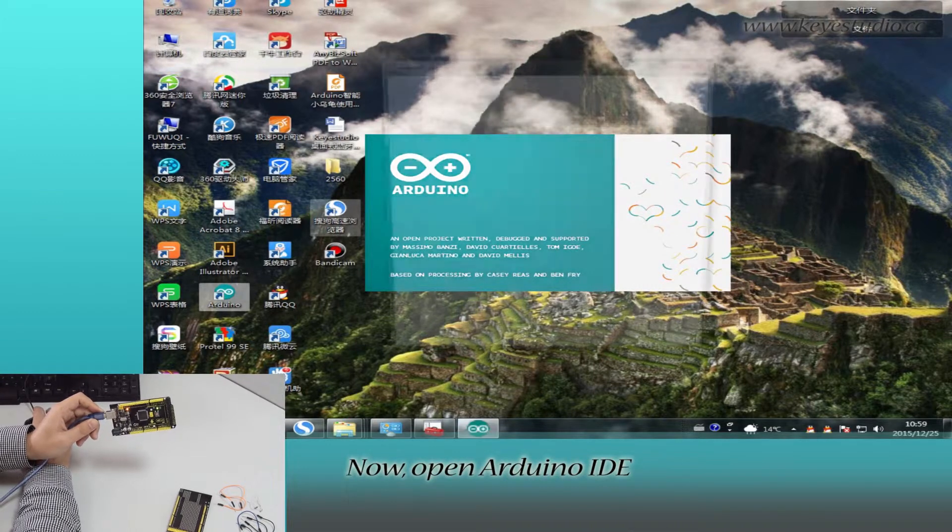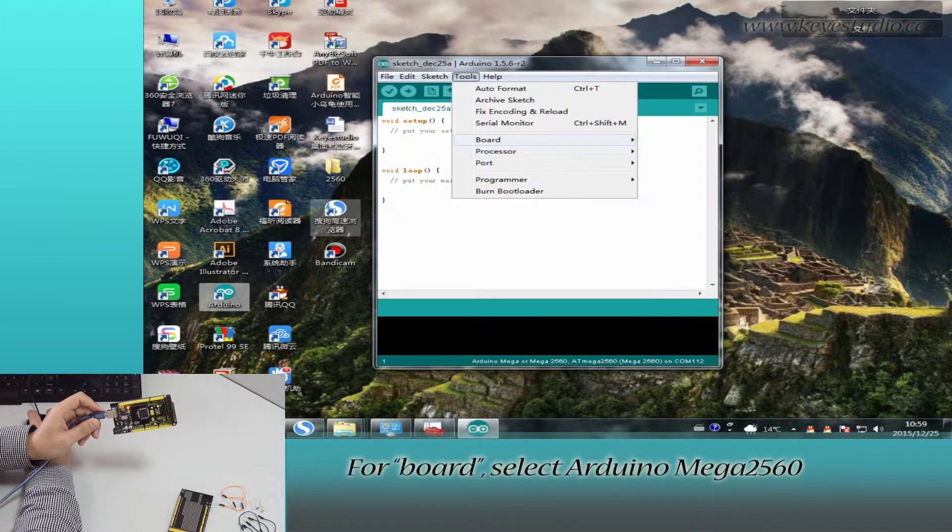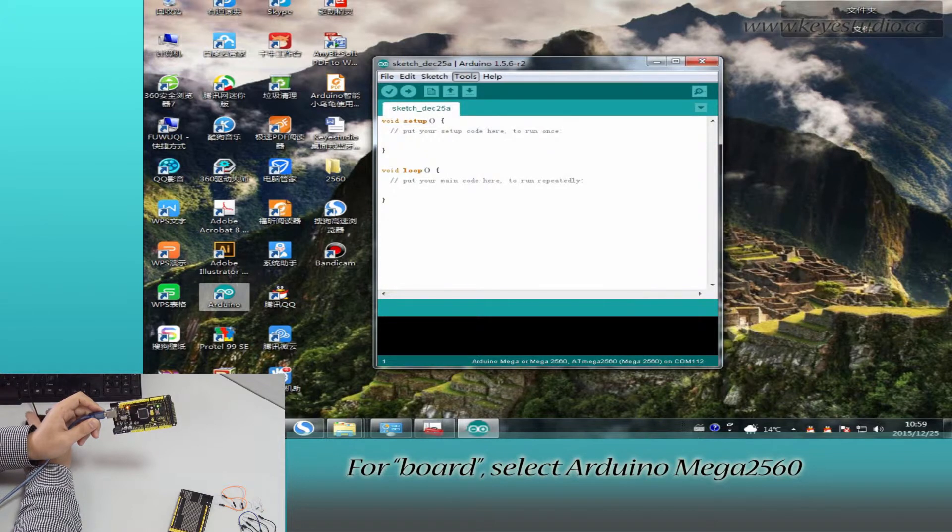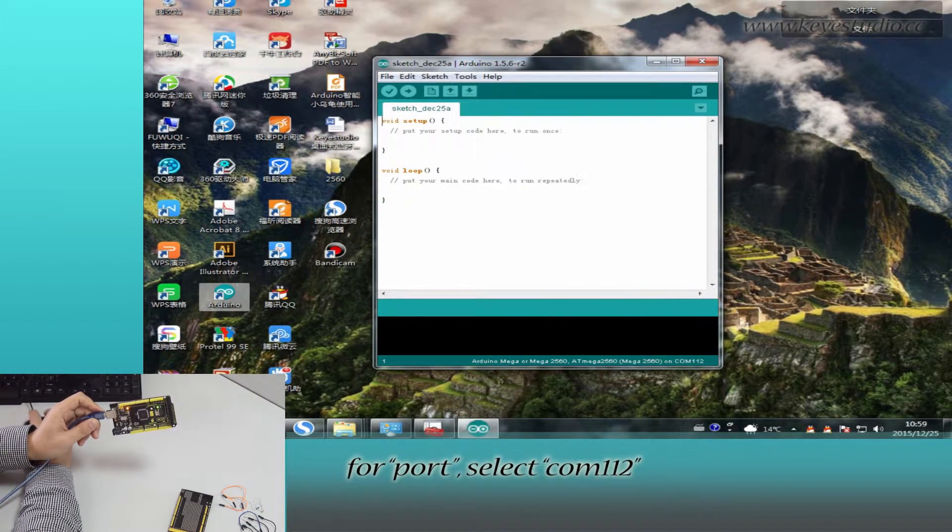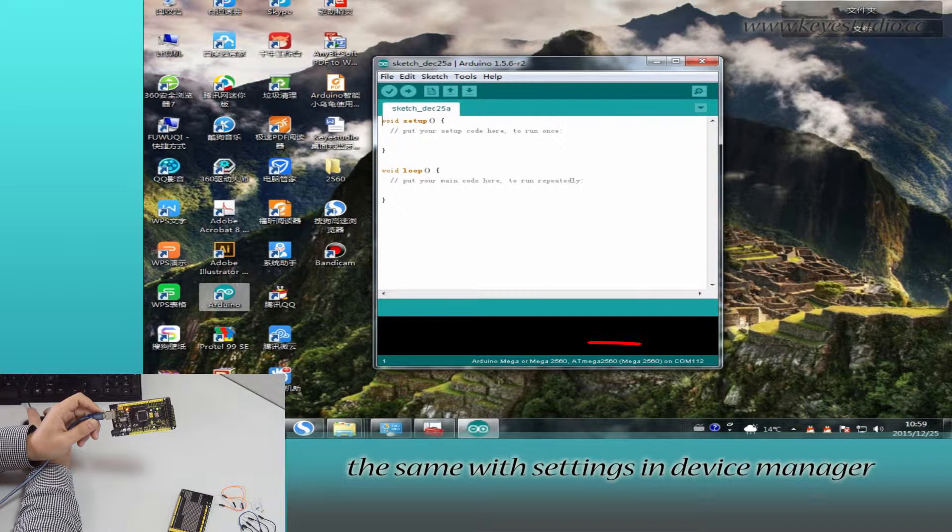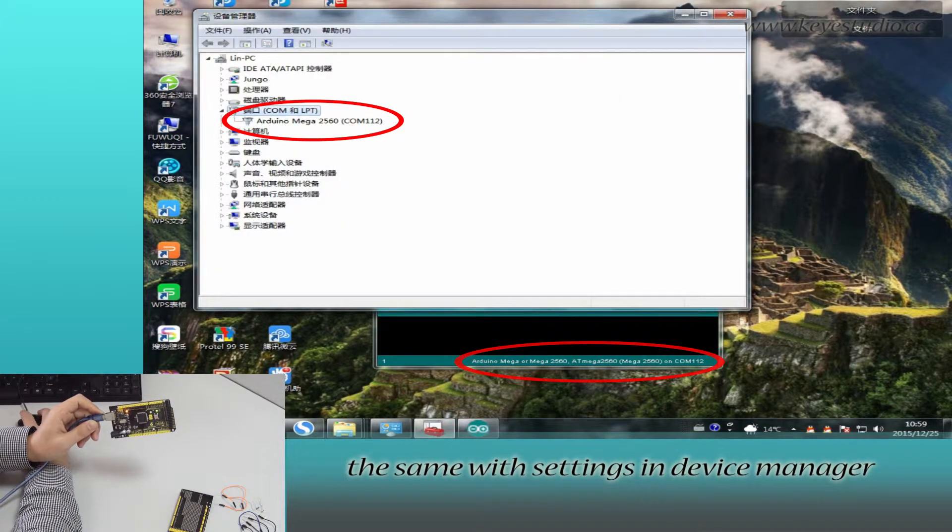Now, open Arduino IDE and click Tools. For Board, select Arduino Mega 2560. For Port, select COM 112, the same with settings in Device Manager.